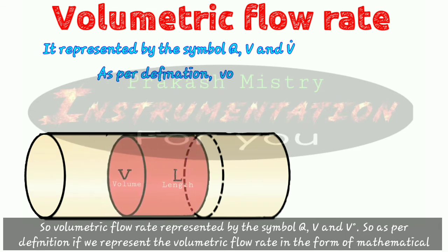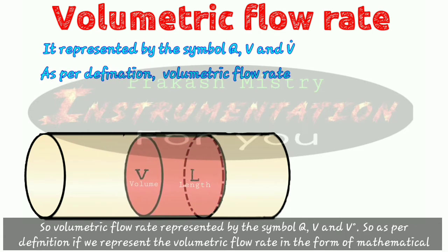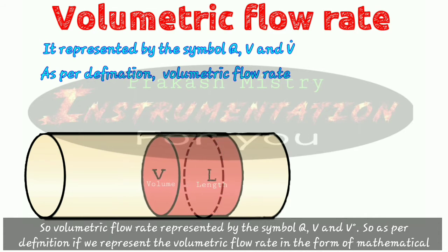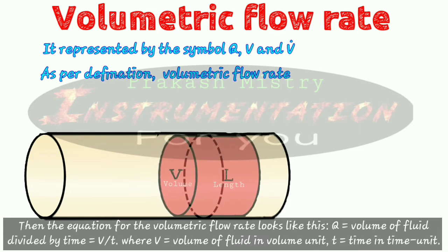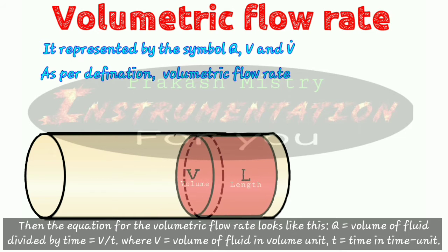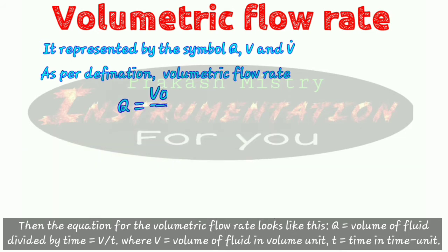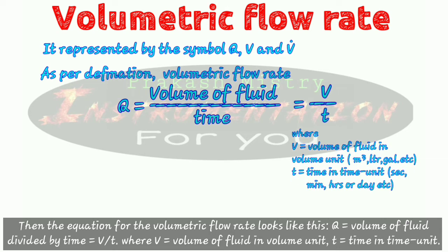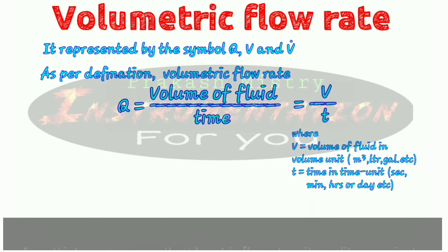As per the definition, if we represent the volumetric flow rate in mathematical form, the equation looks like this: Q is equal to volume of fluid divided by time, which is equal to V divided by T. Here V is equal to the volume of fluid in volume units and T is equal to time in time units.